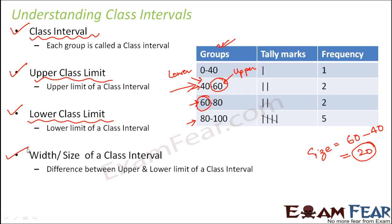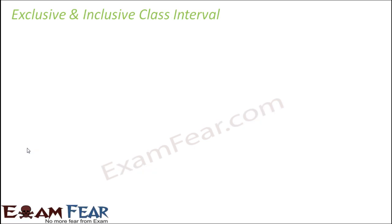These are a few things related to the grouped frequency distribution table. Now whenever we have to make a grouped frequency distribution table, the most critical and challenging part is to understand how to make groups — how to decide the class intervals. One very interesting concept here is that of exclusive and inclusive class intervals.